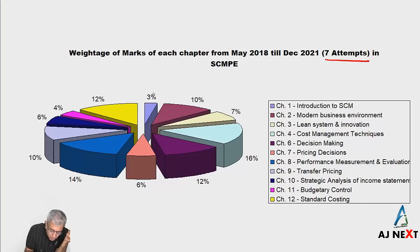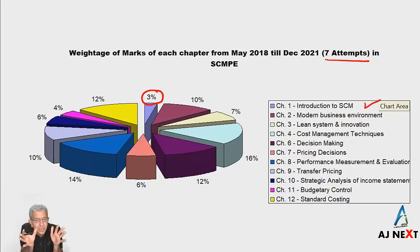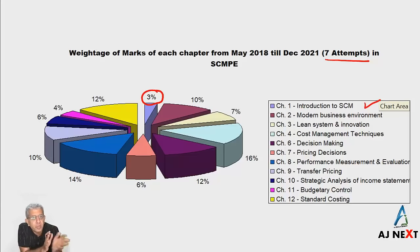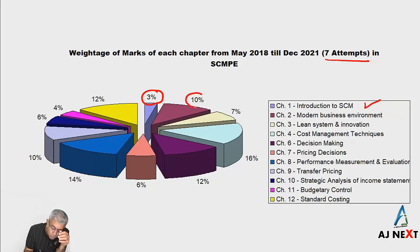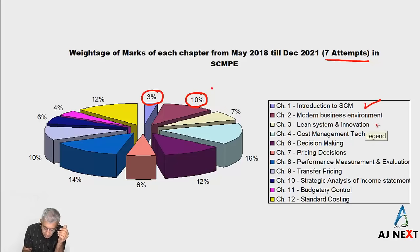In seven attempts, Chapter 1 — Introduction to SCM — has been asked for approximately 3% of the marks. On average, out of 100 marks, approximately three marks are there for this chapter. Chapter 2 is quite important; it is approximately asked for 10% of the marks.